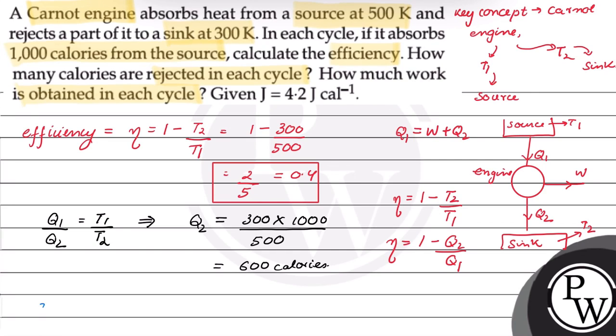From Q1 equals W plus Q2, work done is equal to 1000 minus 600 calories, which equals 400 calories.